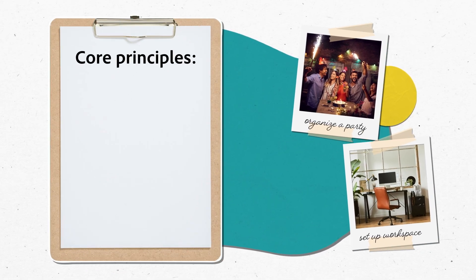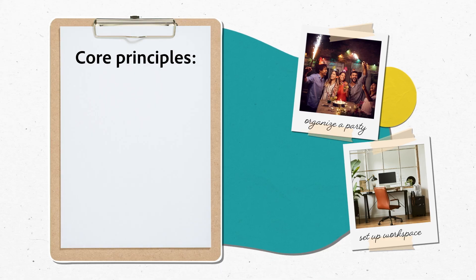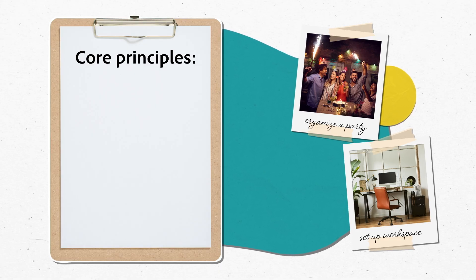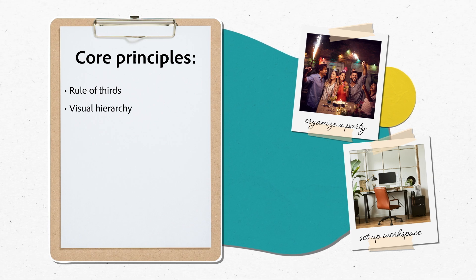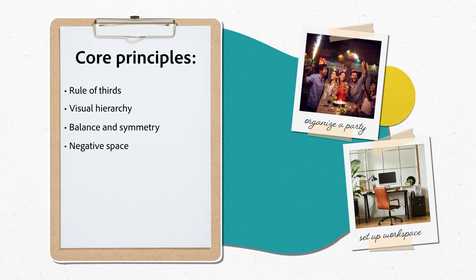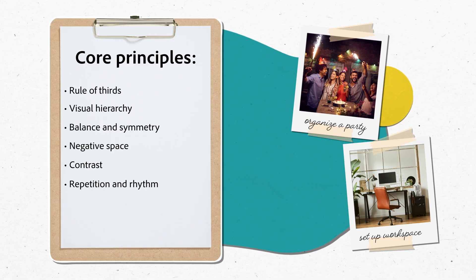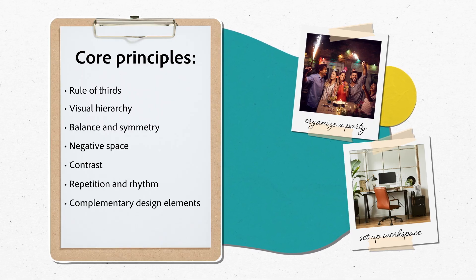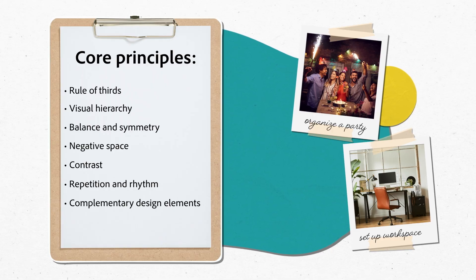Composition is all about arranging elements in your design — think of it as creating a visual roadmap. We'll explore core principles: the rule of thirds, visual hierarchy, balance and symmetry, negative space, contrast, repetition and rhythm, and complementary design elements. These principles help ensure your designs are visually appealing and effective.